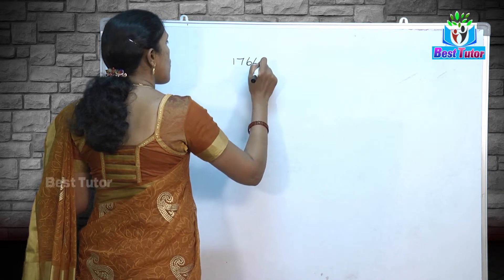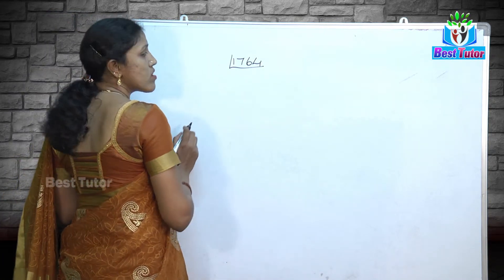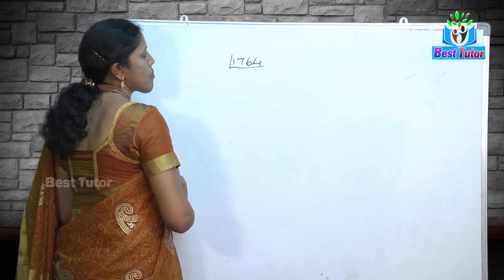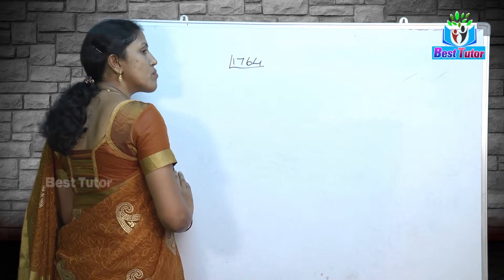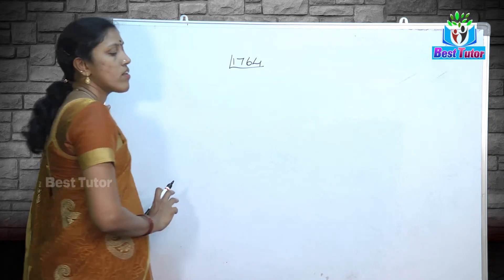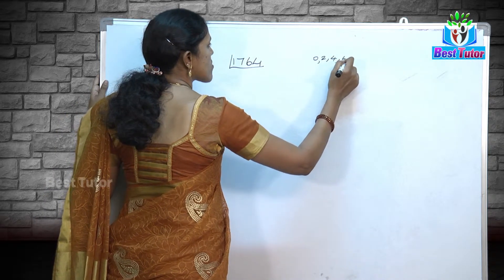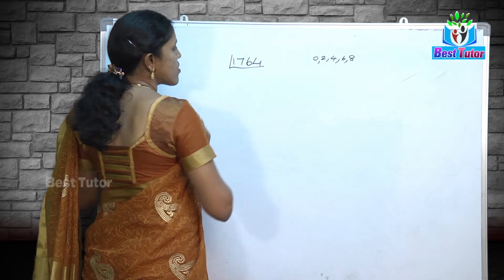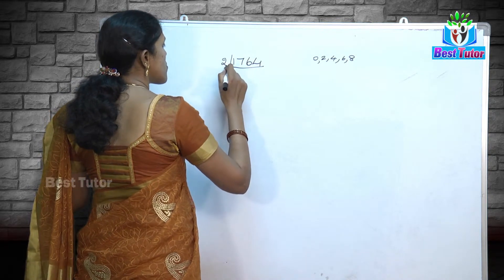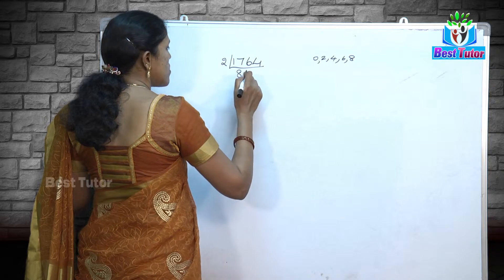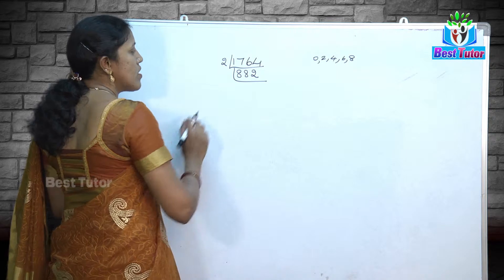Let us choose a bigger number: 1764. We need to find the square root of 1764 using the prime factorization method. Is this number divisible by 2? A number is divisible by 2 if the digit in its ones place is 0, 2, 4, 6, or 8. Here the digit in the ones place is 4, so yes, it is divisible by 2. Dividing: 1764 divided by 2 gives 882. Is 882 again divisible by 2? Yes.